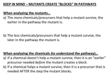Here are some helpful hints. When looking at the mutants: the more chemicals or precursors that help a mutant survive, the earlier in the pathway that mutant is blocked, because more later precursors can still allow it to produce the final product. Conversely, the fewer compounds that help a mutant survive, the later in the pathway the block is. When analyzing compounds to set up the pathway: if a chemical doesn't help a mutant survive, it is an earlier precursor needed before the mutant's block. If a chemical does help a mutant survive, it is a precursor needed after the step the mutant blocks.